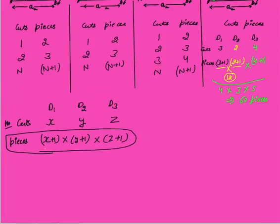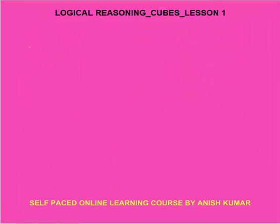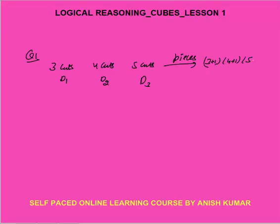As you can see, I have made 3, 2, and 4 cuts here, giving (3+1)(2+1)(4+1) pieces. Now we will do the questions. Question 1: A cube is cut with 3 cuts in direction 1, 4 cuts in direction 2, and 5 cuts in direction 3. How many pieces will there be? The number of pieces = (3+1)(4+1)(5+1) = 4 × 5 × 6 = 120 pieces.